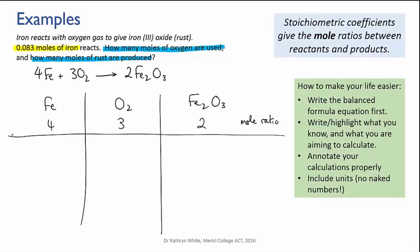And we know the amount of iron present, which is 0.083 moles. According to the ratio, this represents four parts, and we need three parts of oxygen to produce two parts of rust.